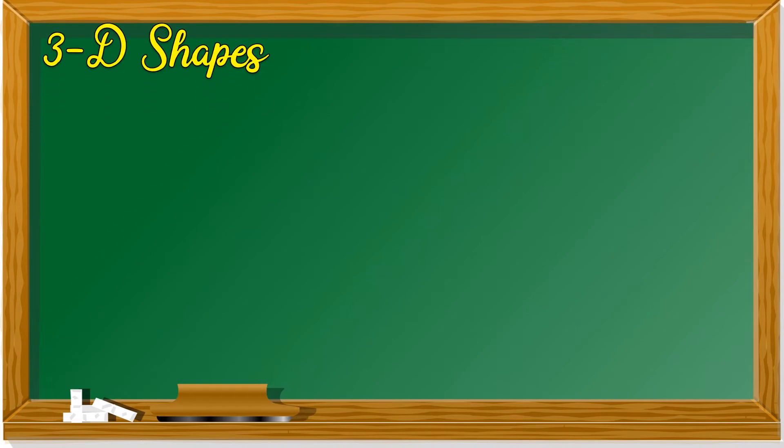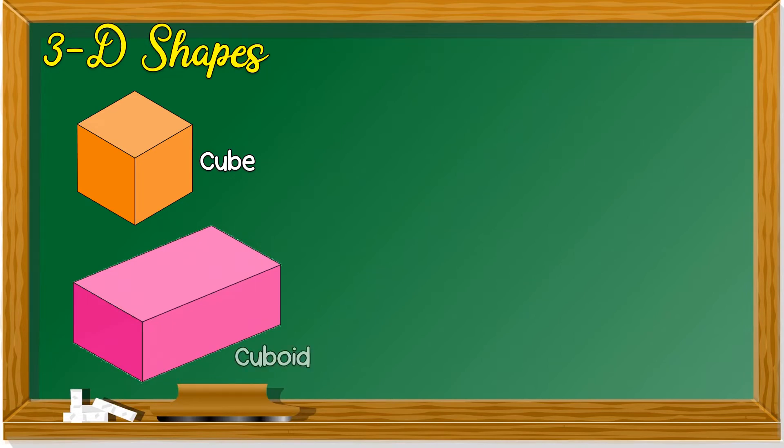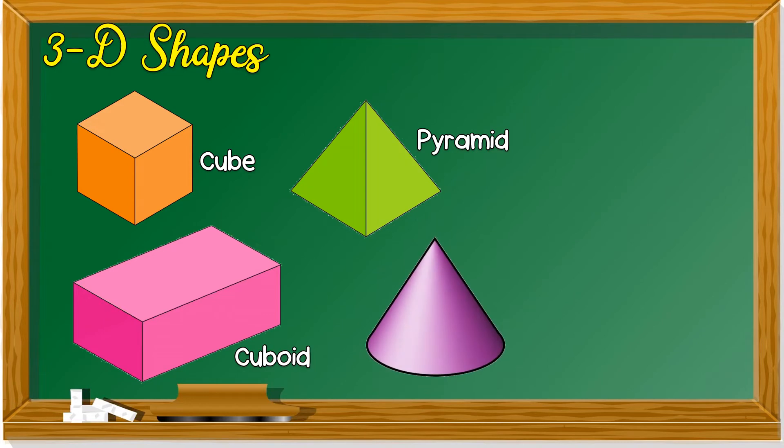As for 3D shapes, this is a cube. Cuboid. This is a pyramid, like those pyramids in Egypt. This is a cone. Last one, cylinder.